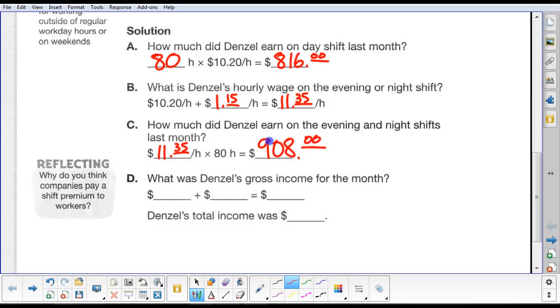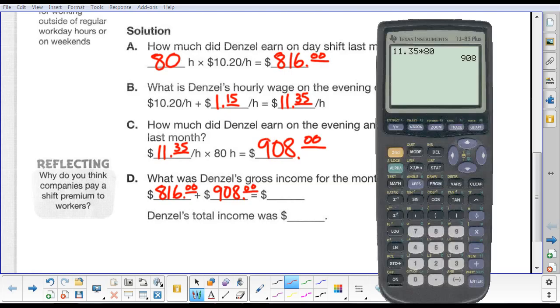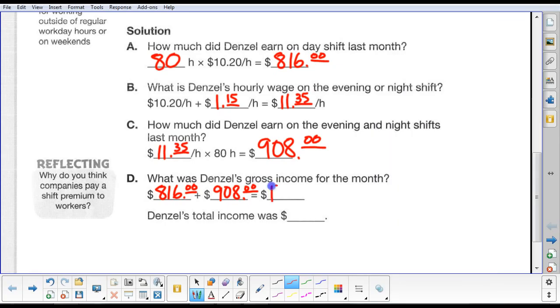What was Denzel's gross income for the month? Well, all we do is we add up the amount of money he made on day shift, the amount of money he made on evenings and nights. $816.00 plus $908.00. We can add those two numbers together. $816.00 plus $908.00, and he made $1,724.00. Denzel's total income was $1,724.00.